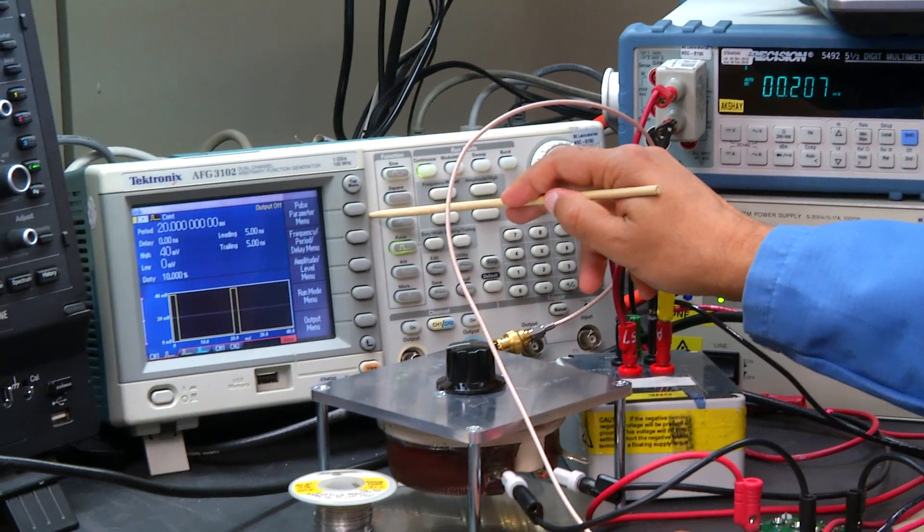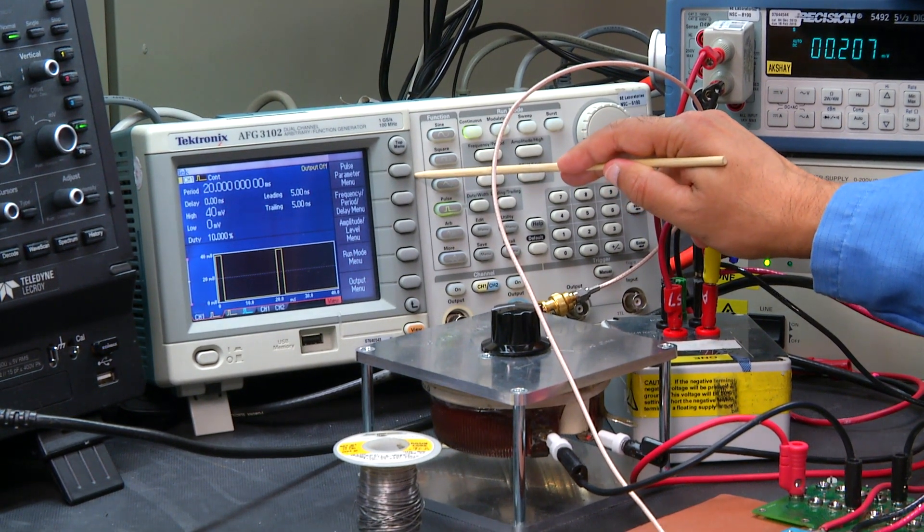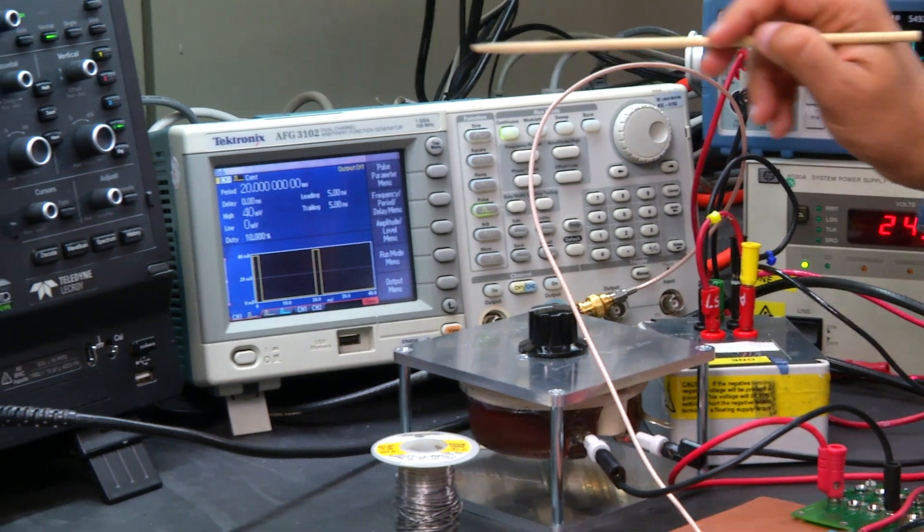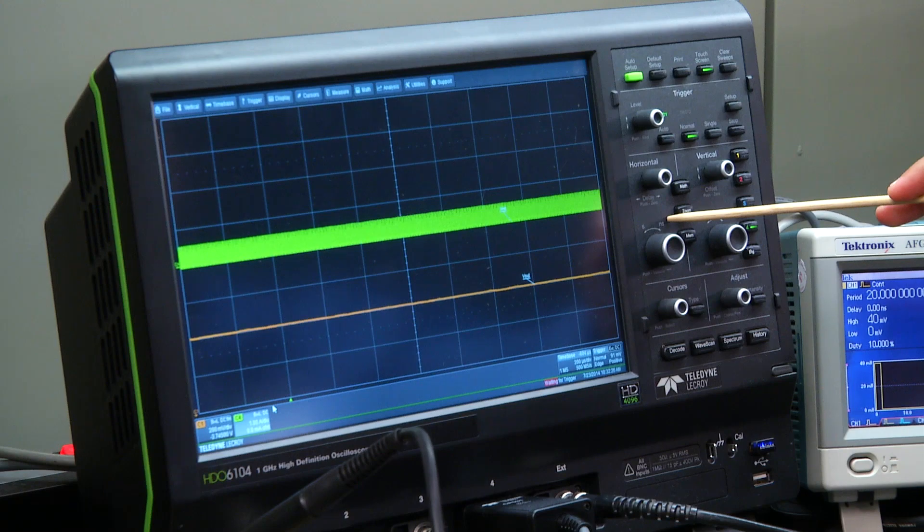The function generator is going to be used to create a load transient from 200 milliamps to 2 amps. The oscilloscope is going to be used to monitor the current through the inductor and the output voltage.